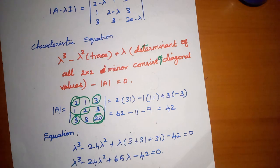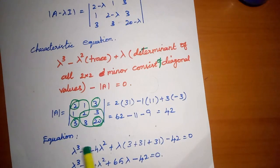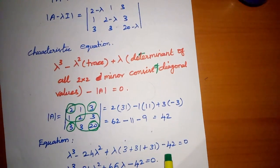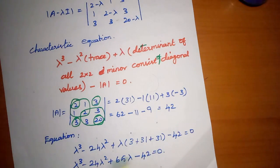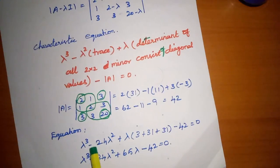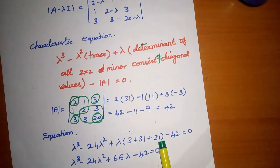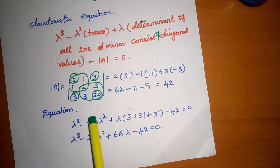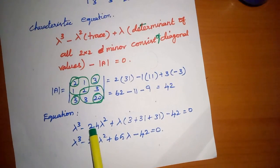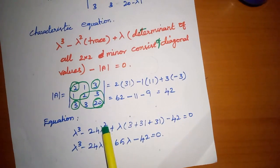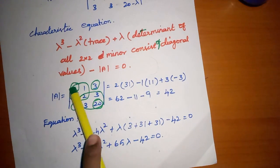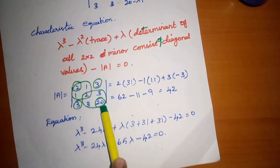Now forming the equation: lambda cubed minus lambda squared into trace. The coefficient of lambda squared equals the trace, which is the sum of all diagonal elements: 2 plus 2 is 4, plus 20 is 24.